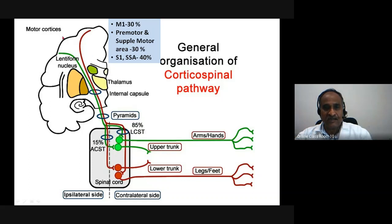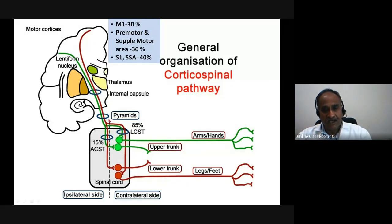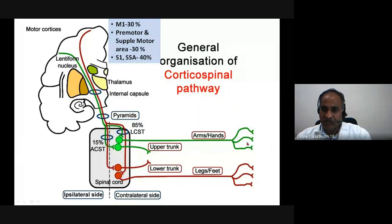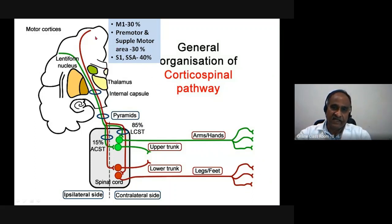At the medulla, 85% of the fibers cross to the opposite side and descend as the lateral corticospinal tract. The remaining 15% descend to the spinal cord and relay at various segments as the anterior or ventral corticospinal tract. So the plan is: start from the motor cortex, pass through the internal capsule, reach the medulla, 85% of fibers cross to form the lateral tract, and the remaining form the ventral tract. These are the longest tracts — from the brain to the sacral level.